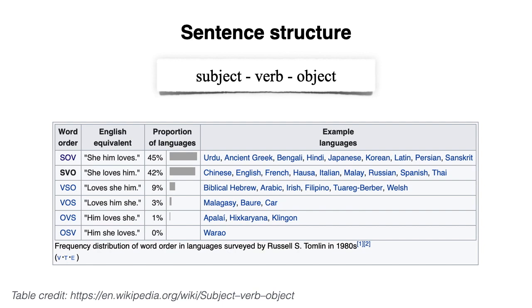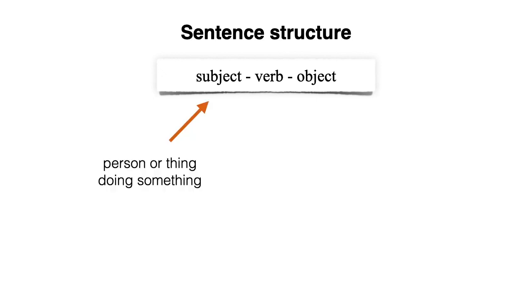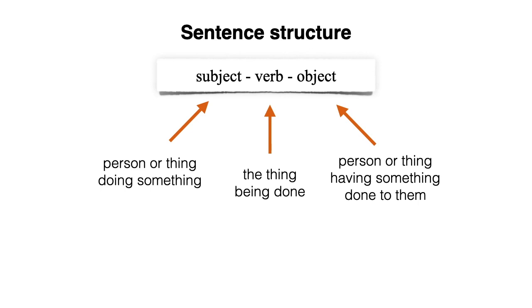In the English language, sentences have what is known as an SVO structure, where the subject comes first, the verb second, and the object third. Other languages have different structures, where the most dominant structure is in fact SOV, but since this series of videos is in English, I will focus on the SVO structure. Just to remind you, the subject is typically the person or thing doing something, the verb is the thing being done, and the object is the person or thing having something done to them.